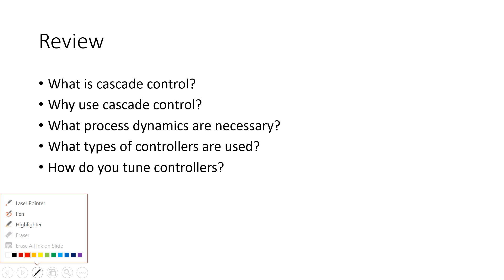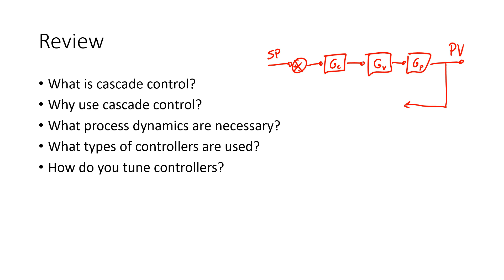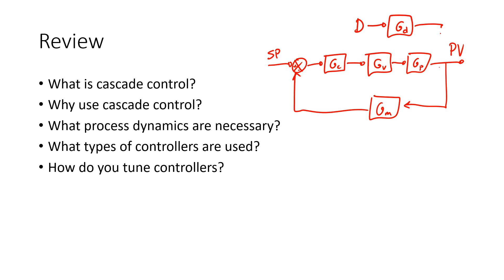Let's say I have a standard feedback loop. I'm going to do a set point — I want to drive my process variable to this set point. I have a controller, maybe a final control element like a valve, and then I have my process. This is going to be my process variable, and I might have measurement dynamics as well. So this is a standard feedback control loop. One of the things we're going to be looking for are disturbances that are going to affect our process — a disturbance that I can either measure or not measure, and that's going to affect my process.